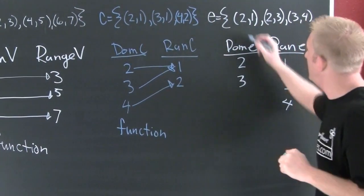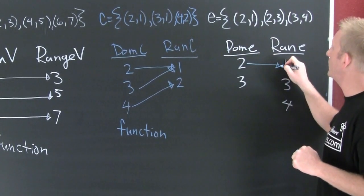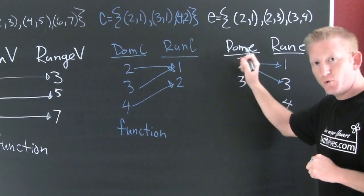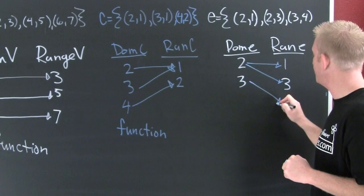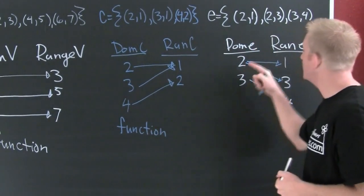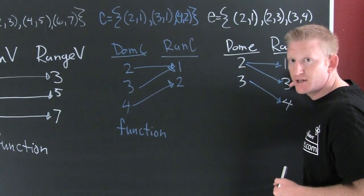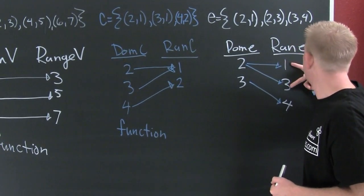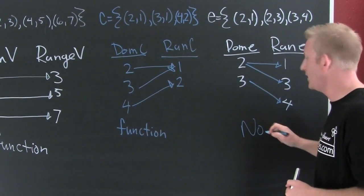For relation E: two goes to one, but two also goes to three — and three goes to four. Is this a function? No. Because this domain element has more than one range element, it doesn't correspond to exactly one. Relation E is not a function.